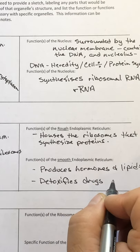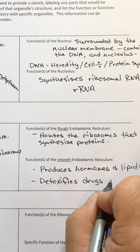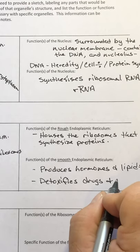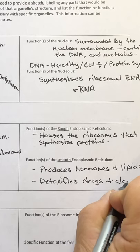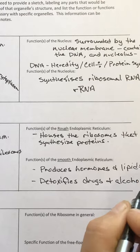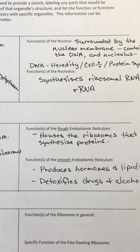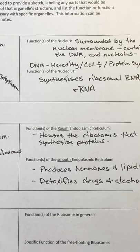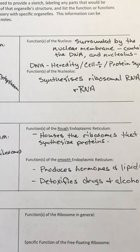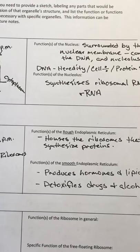Some people who have had problems with drugs or alcohol will develop large amounts of smooth endoplasmic reticulum in their liver cells, and they will develop a tolerance initially until those cells are just overcome. Another function of that smooth ER is to break down and detoxify drugs and alcohol, especially in the liver cells.